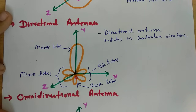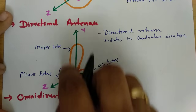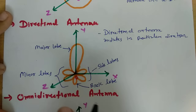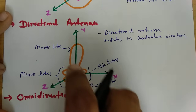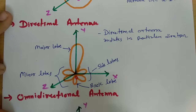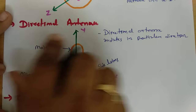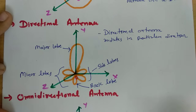The directional antenna has the property of radiating in a particular direction. The major lobe consists of the maximum radiation. Other than the major lobe are minor lobes, and exactly opposite to the major lobe is the back lobe. That is the directional antenna radiation property.